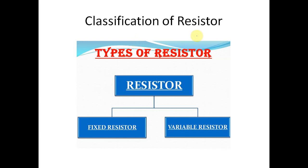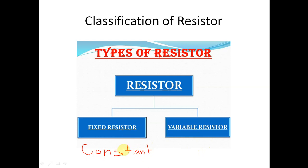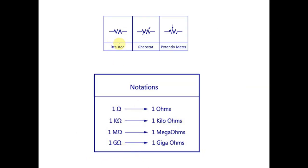Classification of resistors: there are two types — fixed resistors and variable resistors. Fixed resistors have a constant value, while variable resistors have a value that varies according to the application. The symbols for fixed resistors, variable resistors, and potentiometers are different. Resistance notations used are: 1 Ohm, 1 kilo-Ohm, 1 mega-Ohm, and 1 giga-Ohm.